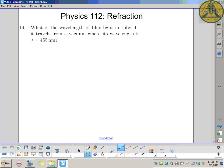This is a question on refraction for Grade 11 physics, dealing with wavelength of light going from a vacuum into ruby. The wavelength in a vacuum is 455 nanometers, so watch your units on that one. We want to figure out what the wavelength is going to be in ruby.